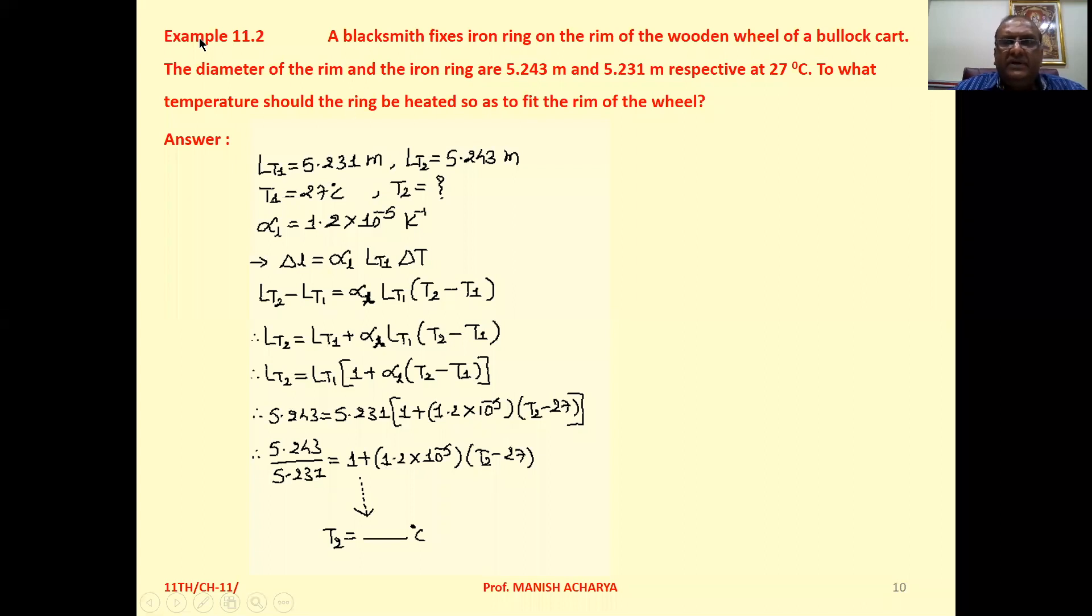Now example 11.2. A blacksmith fixes an iron ring on the rim of the wooden wheel of a bullock cart. The diameter of the rim and the iron ring are 5.243 meters and 5.231 meters respectively at 27 degrees Celsius. To what temperature should the ring be heated so as to fit the rim on the wheel?